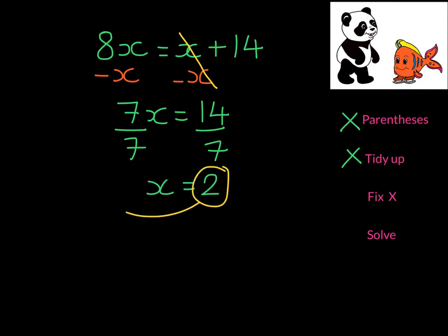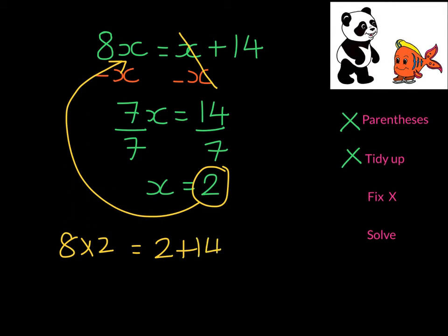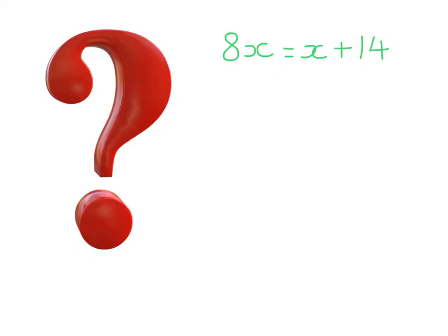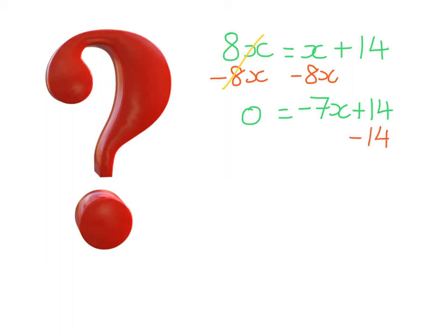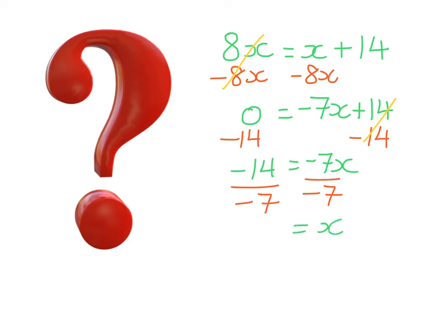If I want to check this: 8 times 2, is it equal to 2 plus 14? Well, 16 equals 16, so yes, we've solved it correctly. A question I'm often asked is: could we have subtracted 8X from both sides instead? Of course we could. On the left-hand side that gives us 0, and on the right-hand side we're left with negative 7X and 14. From here, we subtract 14 from both sides, leaving negative 14 equals negative 7X. Then we divide by negative 7 on both sides, and X equals 2 — the same answer.